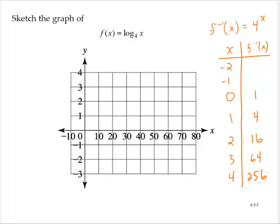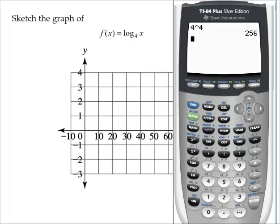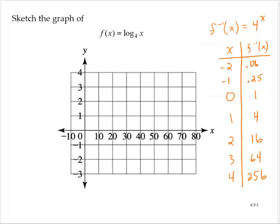4 to the negative 1st power is 0.25, or 1/4. 4 to the negative 2nd power is 1/16, which is 0.0625. That's 1/16, that's 1/4.